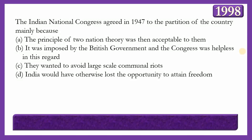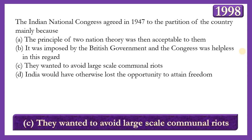Next question: The Indian National Congress agreed to partition of India in 1947 mainly because: (A) the principle of two-nation theory was acceptable to them; (B) it was imposed by the British government; (C) they wanted to avoid large-scale communal riots; or (D) India would have otherwise lost the opportunity to attain freedom. The answer is option C — they wanted to avoid large-scale communal riots — as communal riots and disharmony were spreading rapidly, forcing Congress leaders to agree to partition.